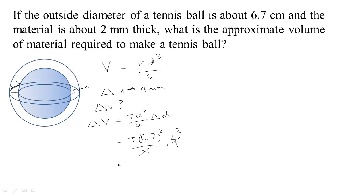Of course that goes in there twice. So we find that the approximate volume of material for this is going to be pi times 6.7 squared is 44.89 times 0.2. So if I calculate that, using pi here we get about 28.205 as the volume.